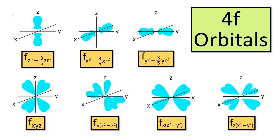D orbitals in higher principal levels have roughly the same shape as the 3d orbitals, however they are larger and they do have more nodes. And finally, let's turn our attention to the f orbitals, which are found in the fourth principal shell and beyond.